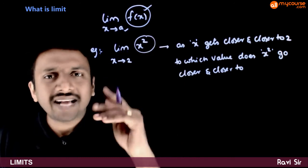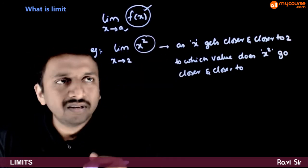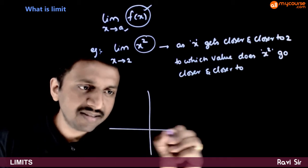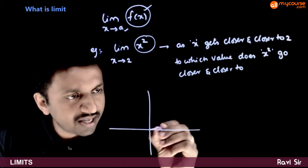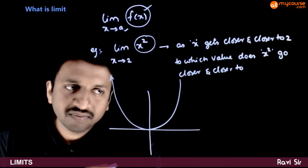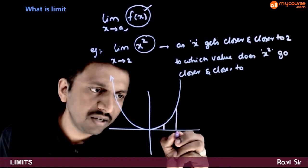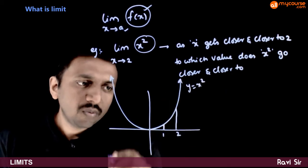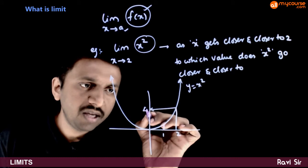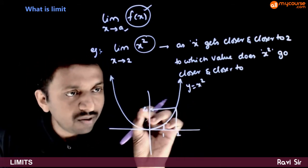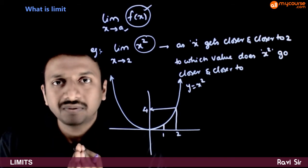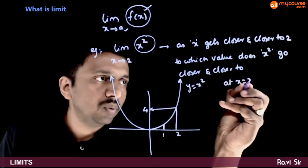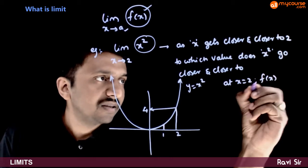If you draw the graph of y is equal to x square, you can try to understand this using a graph. We know that at x is equal to 2, the value of y will be equal to 4. This value of 4 is called the functional value of x square at x is equal to 2. So at x is equal to 2, f of x is equal to 4.